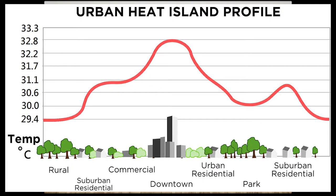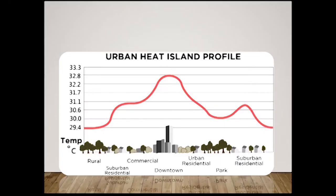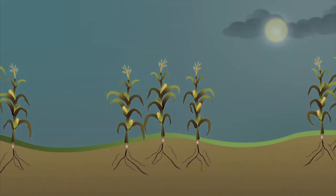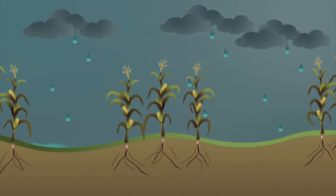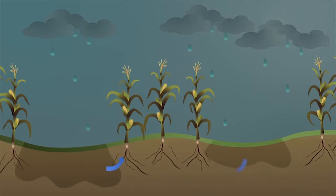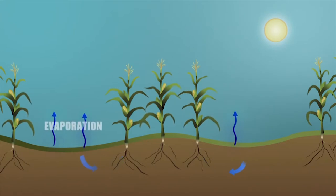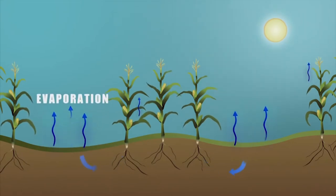In a rural area, most of the region is covered with plants — grass, trees, and farmland with crops. Plants take up water from the ground through their roots, store it in stems and leaves, and the water eventually travels to small holes on the underside of leaves, where it turns into water vapor and is released to the air. This process is called transpiration and acts as a natural air conditioner.